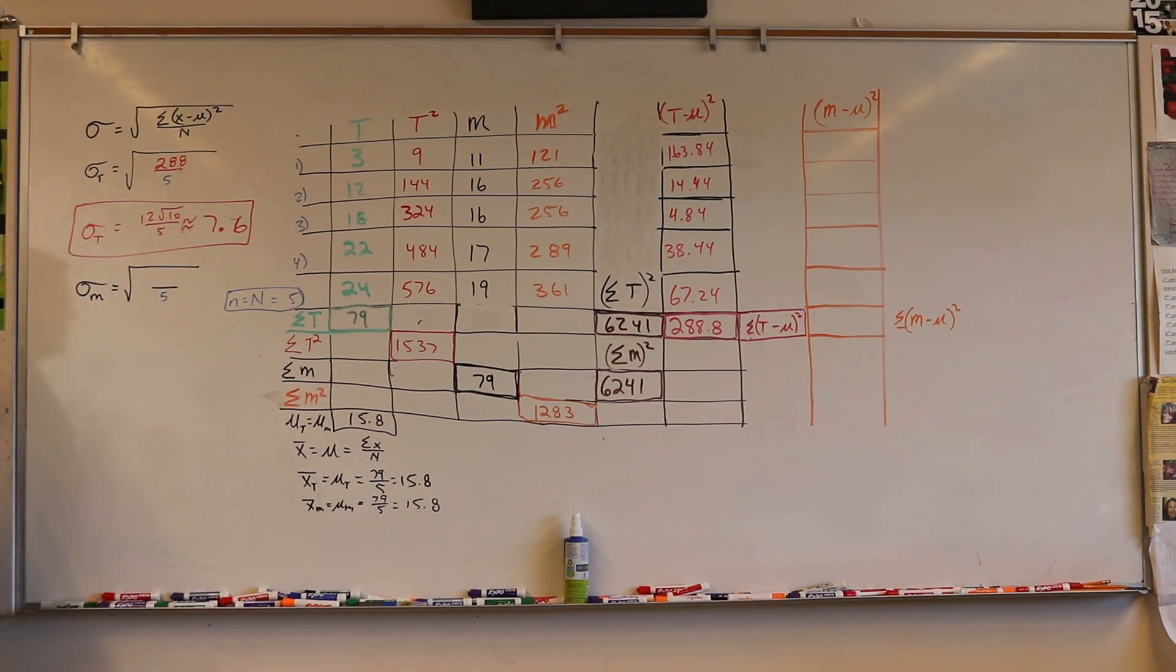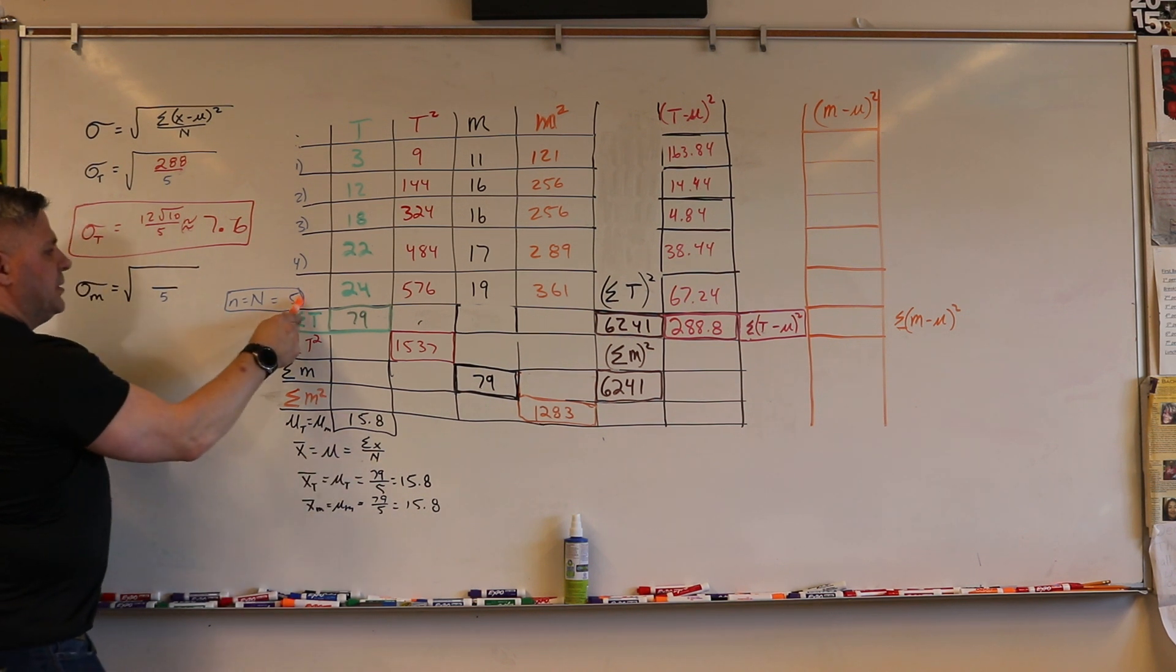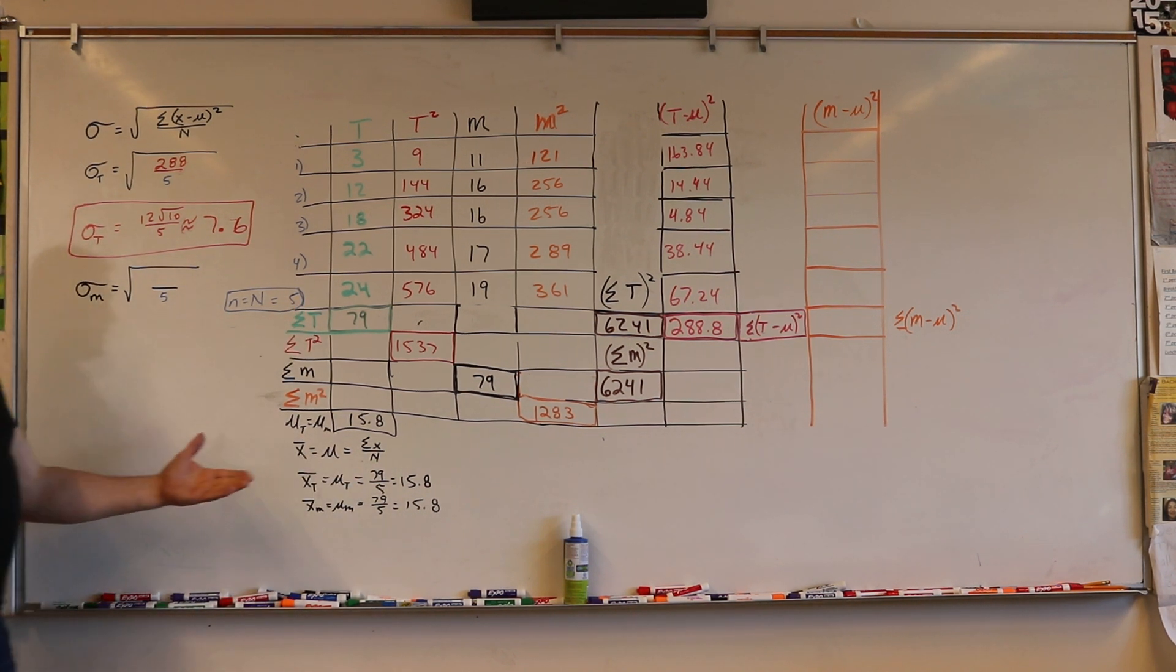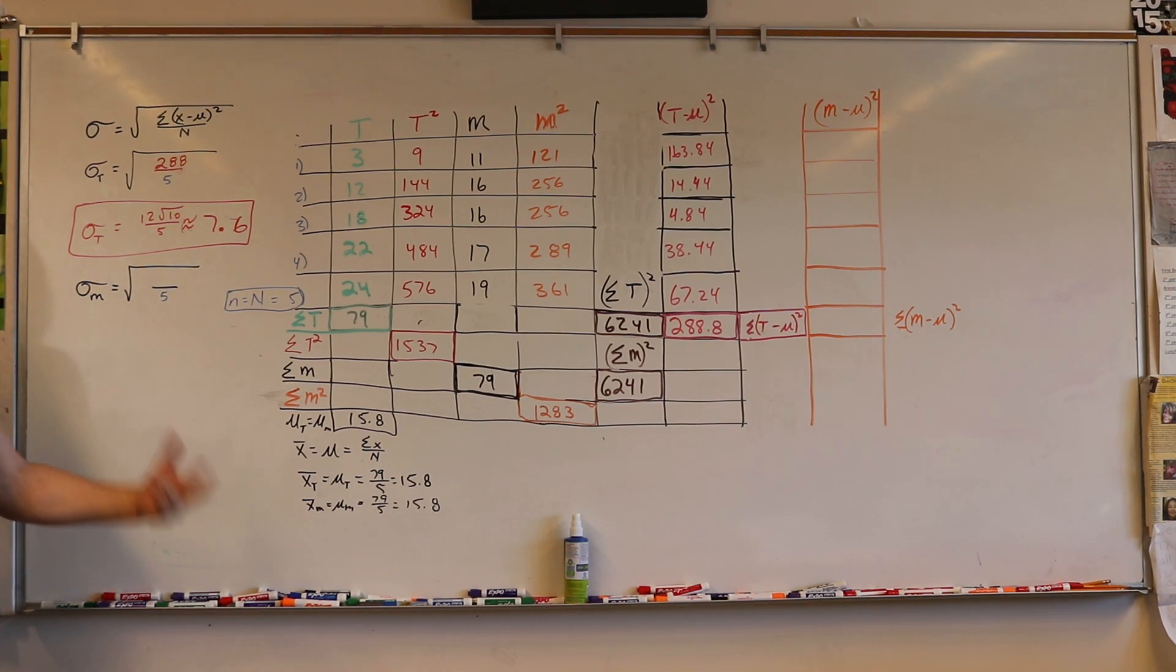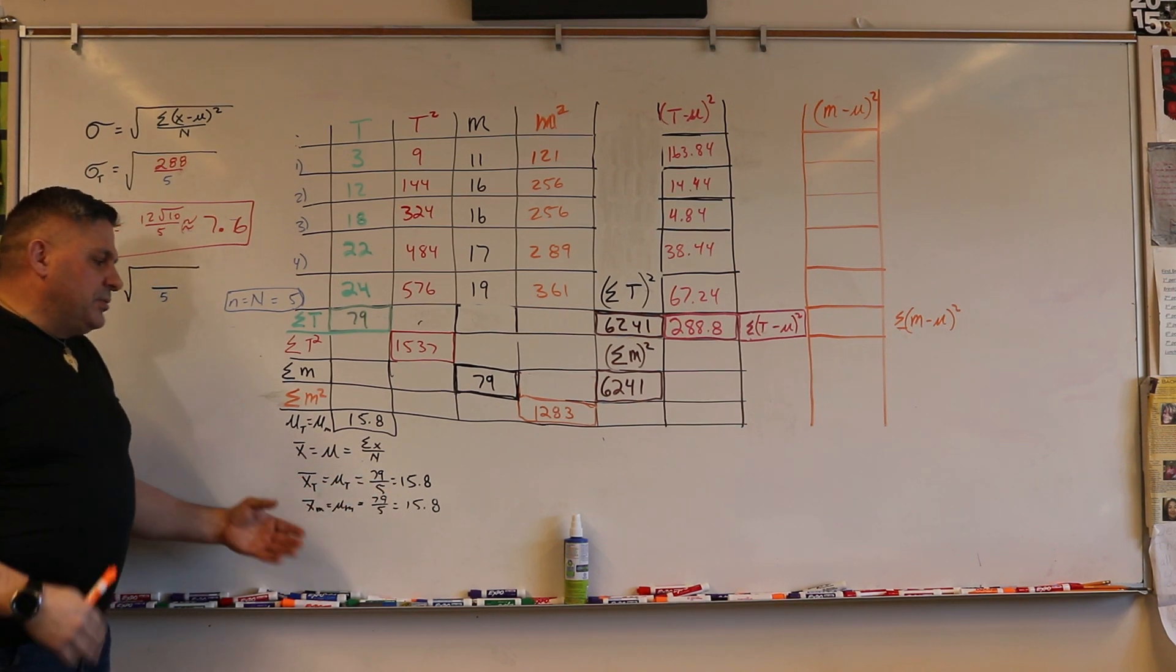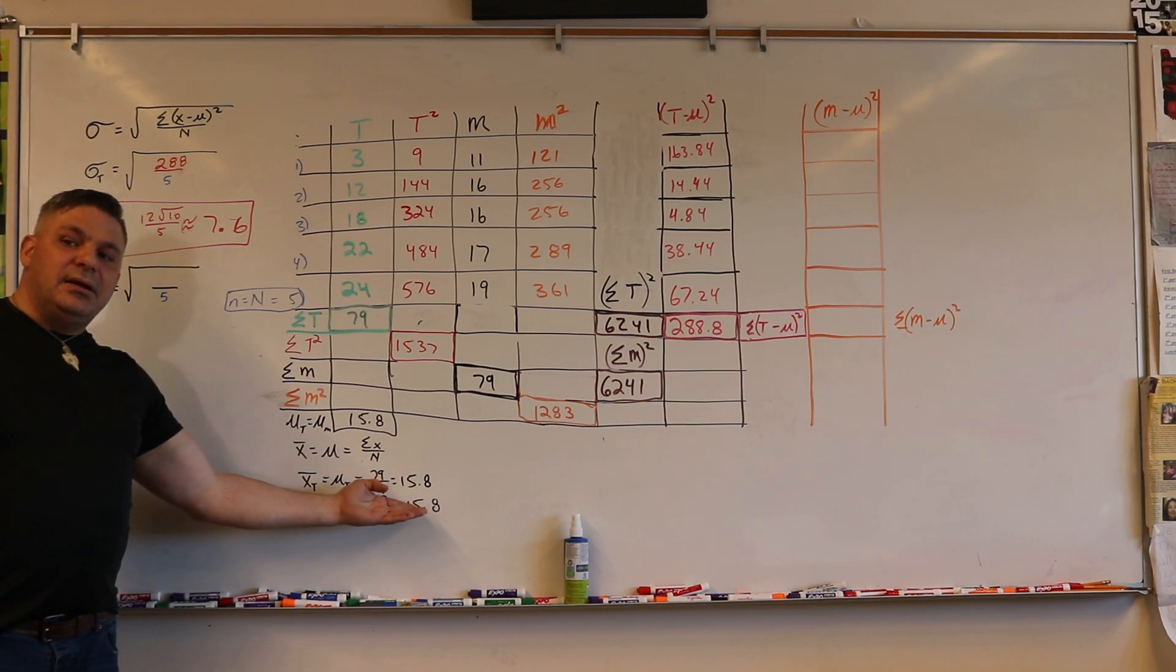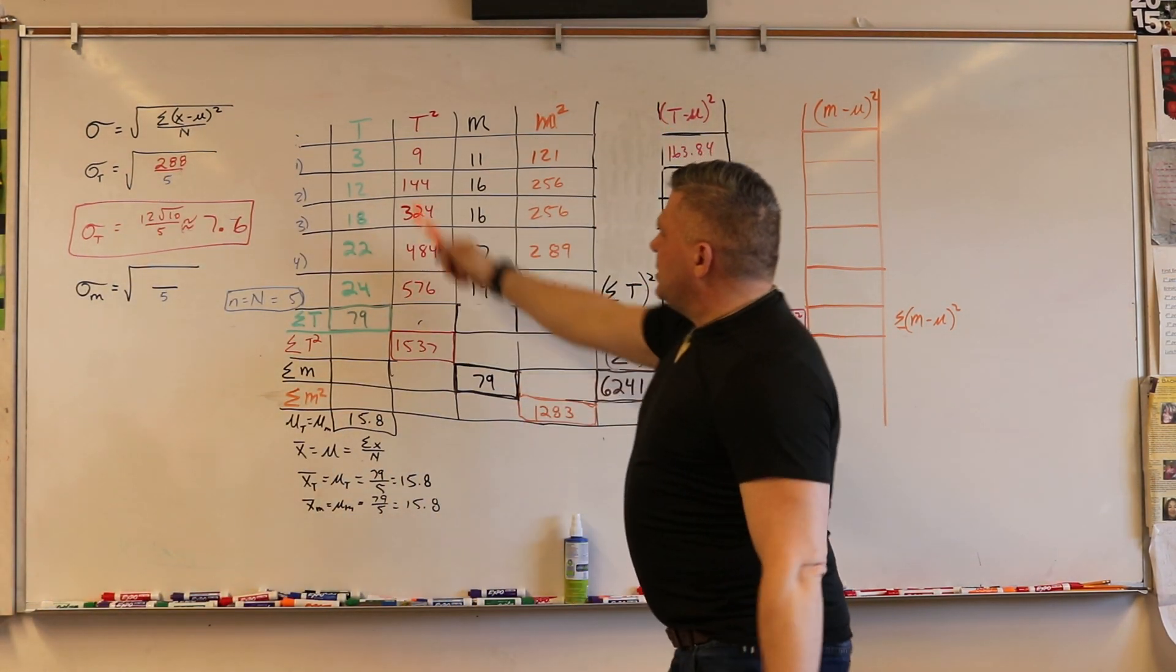Mu is just the mean, so we took the sum of the T's and divided it by the number of numbers. The mu for both Taylor and Manly were the same, so they both ended up being 79 over 5, which is 15.8.